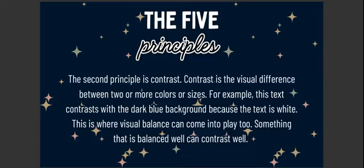Moving on, the next principle is contrast. Contrast is the visual difference between two or more colors or sizes. For example, the text on this presentation contrasts with the dark blue background because the text is white. It's important to remember that if something is balanced well, it can contrast well. Both of these are really important when making designs, especially for products like t-shirts, phone cases, or tote bags — you want designs that are balanced and have a sense of symmetry.